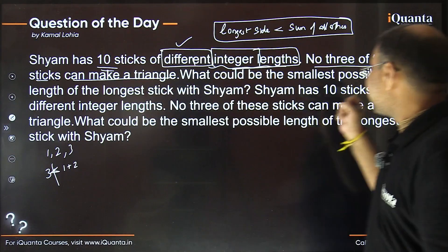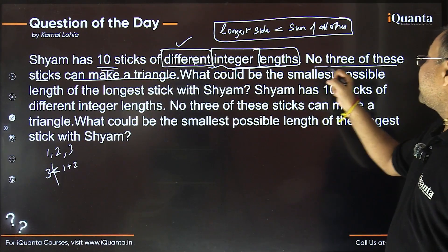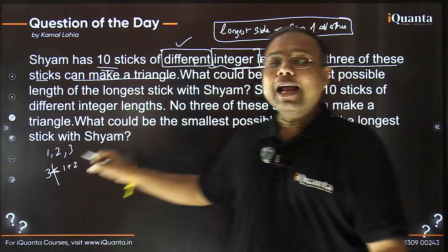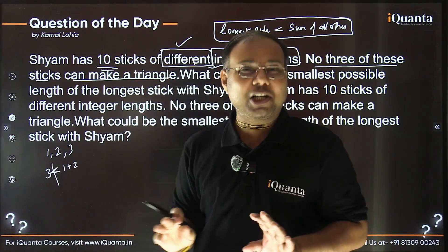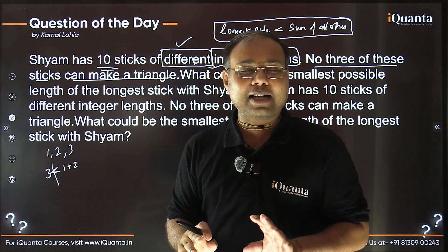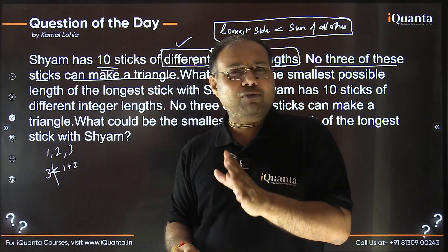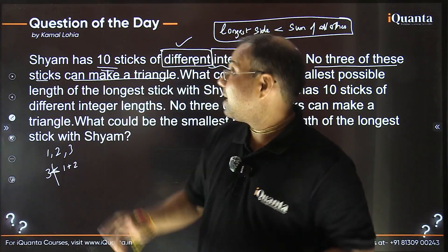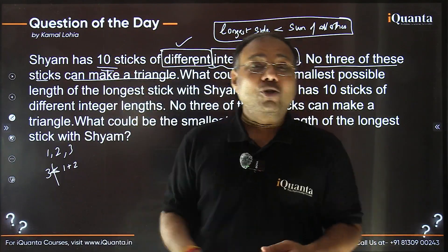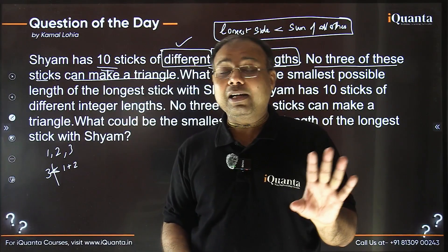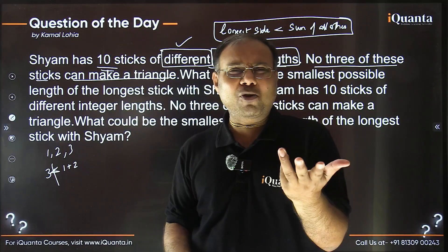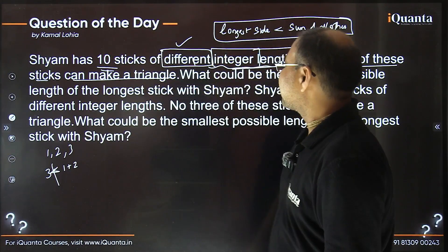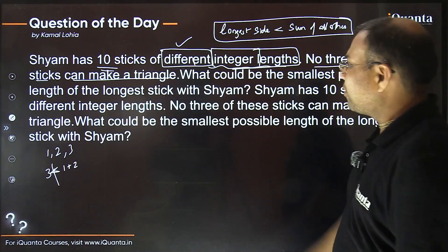Since the condition is that no three sticks can make a triangle, 1, 2, 3 is a valid combination. This is the smallest possible set of stick lengths for Sham such that no three sticks form a triangle.